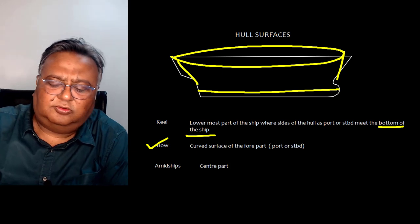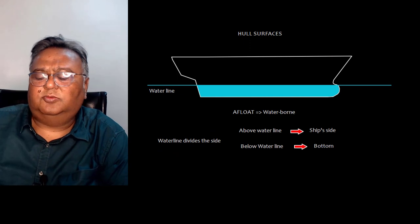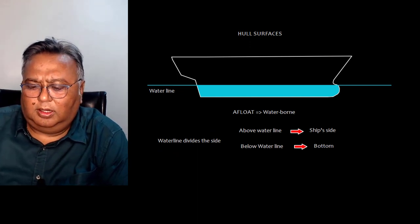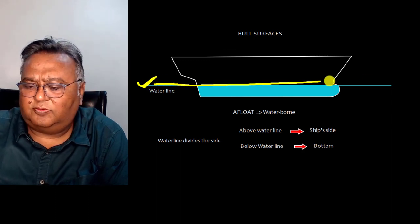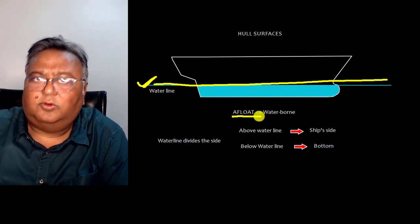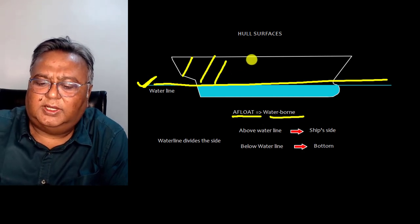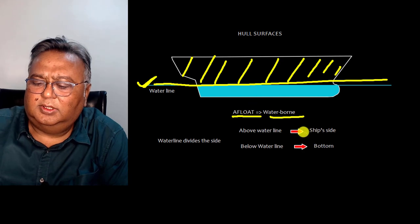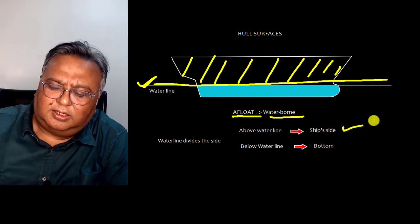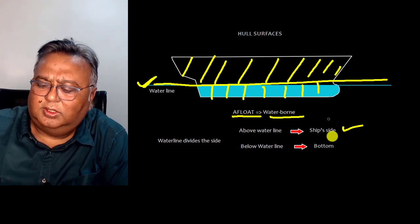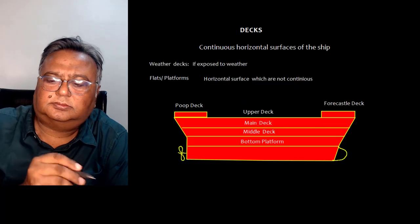Now let's move to the waterline. The waterline is the line where the ship is floating — we can call it the float or waterborne level. The area above the waterline is called the ship side, and the area below the waterline is called the bottom of the ship.